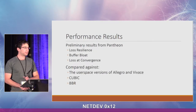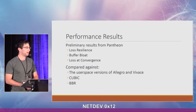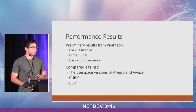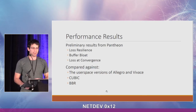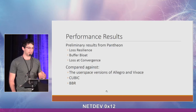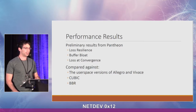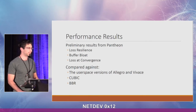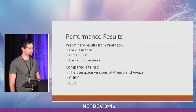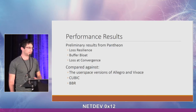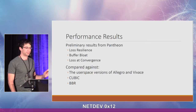Despite these problems, we have some really good initial results. We tested it using Pantheon and looked at three metrics: loss resilience, buffer bloat, and loss at convergence. We compared it against the user-space versions — the benchmarks we are trying to implement — and against Cubic and BBR implementations, with kernel 4.16.